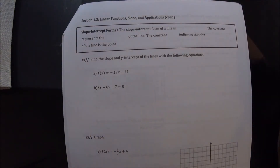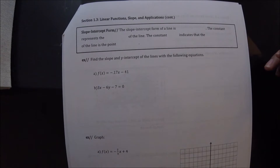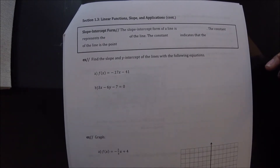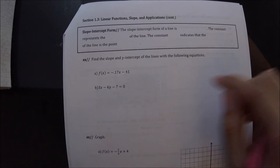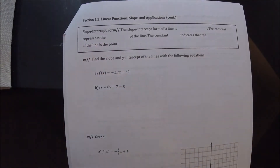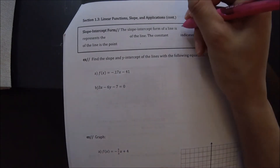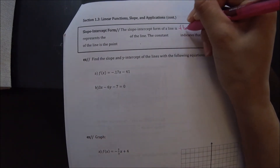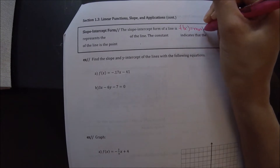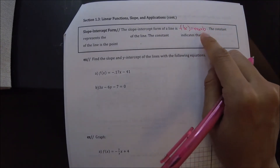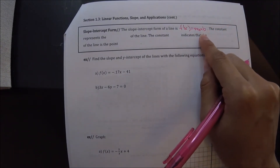We are on the top of page 3 now, and we've been talking about the fact that if a function is in the form f of x equals mx plus b, then it's a line. That form has a specific name — it's called the slope-intercept form. So the slope-intercept form of a line is f of x equals mx plus b. There are different forms of a line, and this is just one of them.